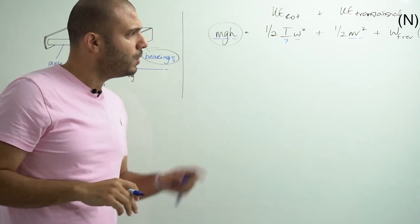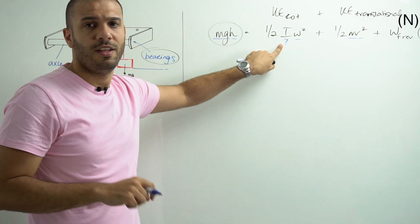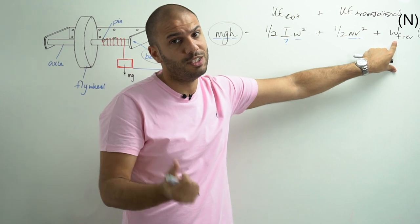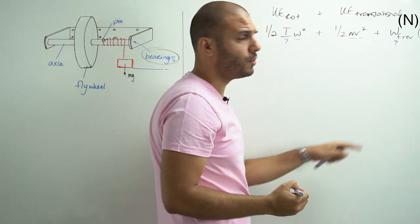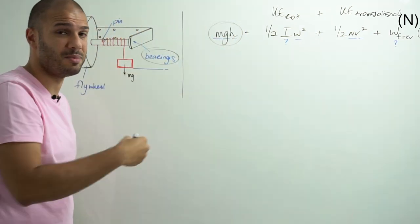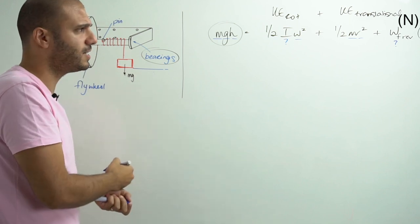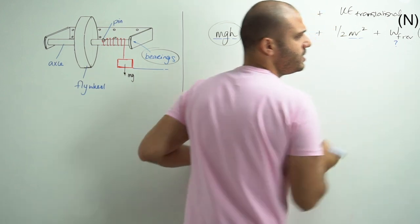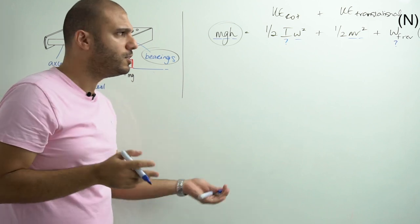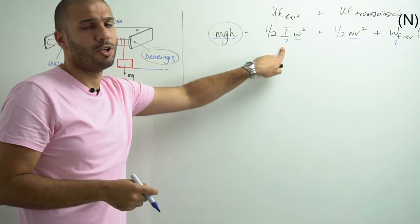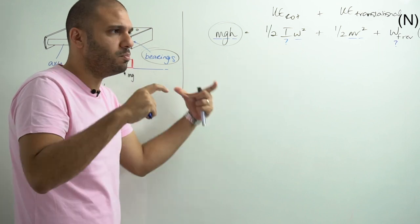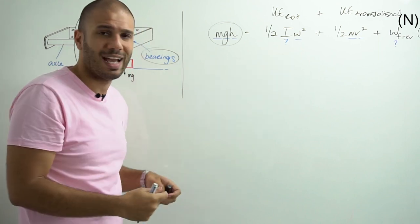As discussed in the previous video, we know all our parameters other than the moment of inertia. However, this time around we also do not know the work done due to friction — so that is another unknown. The number of turns is easy to find by counting how many times the string is wrapped around the main axle. But we have ended up with two unknowns, and as you know from previous physics and mathematics, if you've got two unknowns you do need two equations, which makes this a longer calculation.